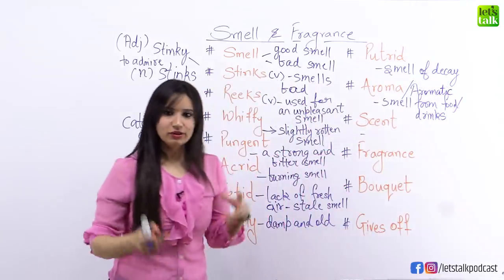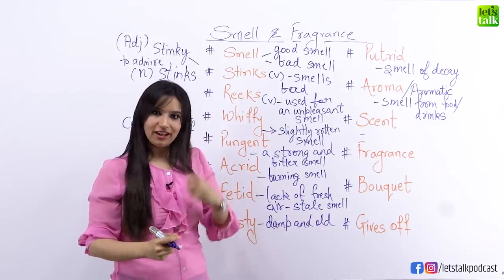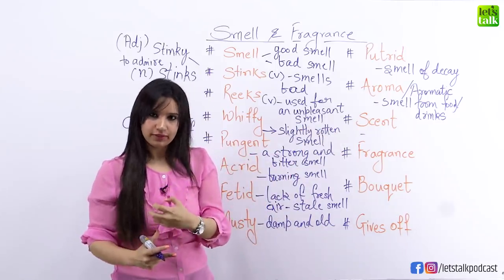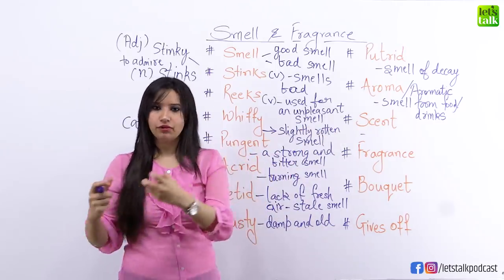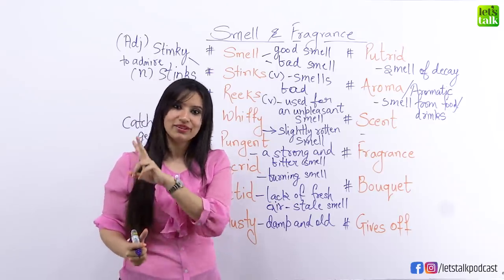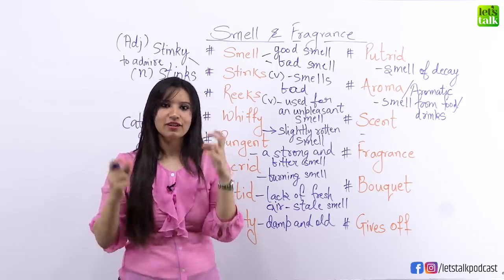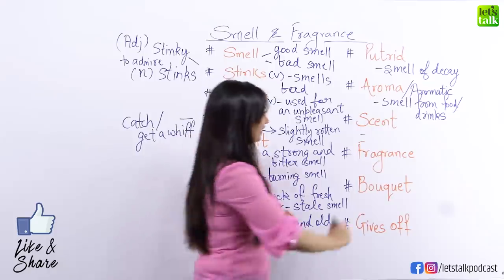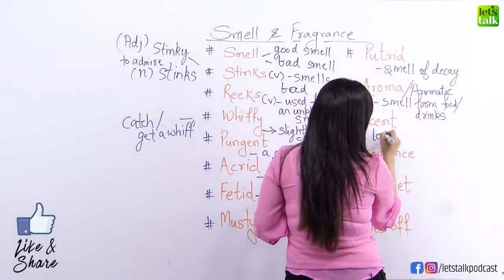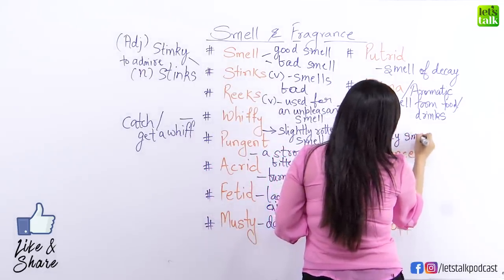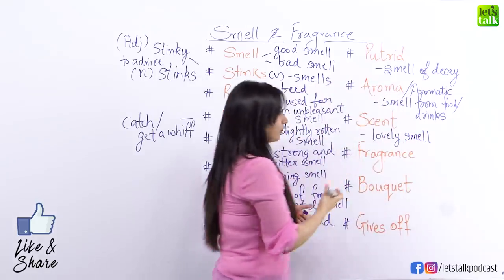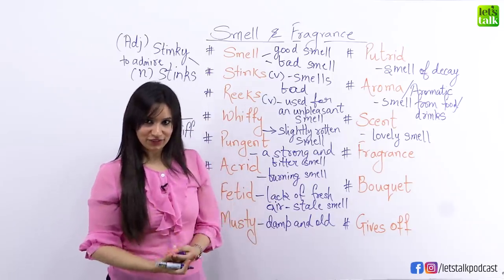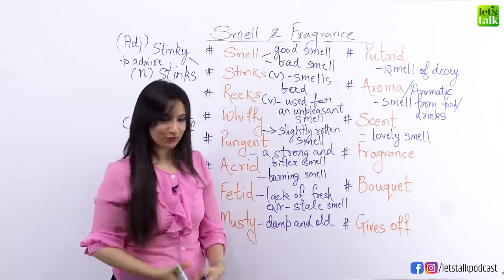The next word is 'scent'. Scent is a particular smell and a good smell, just like aroma — a particular aroma that you get from something. So maybe if you've got two beautiful candles, they might have a scent, they might have a good smell. You could say both the candles that I got have a lovely scent. Some people also use 'scent' in place of the word 'perfume', but it's not actually correct usage — a perfume should be called a perfume and not a scent.